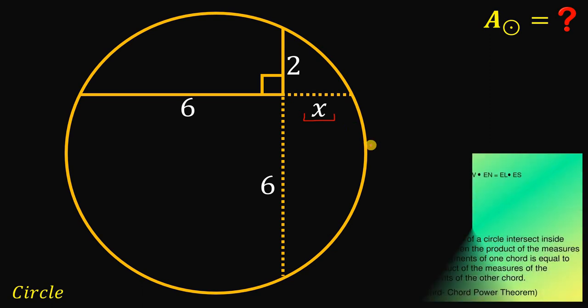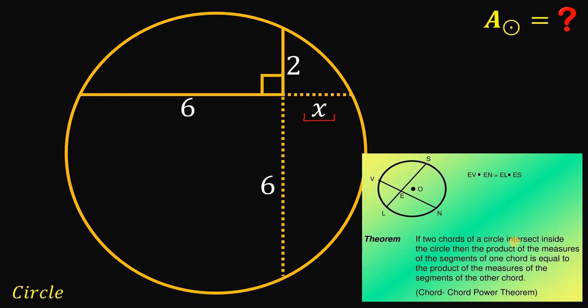And we will use this chord-chord power theorem. Now, it says, if 2 chords of a circle intersect inside the circle, then the product of the measures of the segments of one chord is equal to the product of the measures of the segments of the other chord. Now, given this figure, we can say that EV multiplied by EN must be equal to EL multiplied by ES.